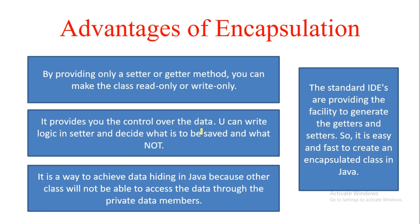Last but not least, standard IDEs like Eclipse provide a facility to generate getters and setters very easily. In Eclipse, you can right-click, go to Generate Sources, and check the checkboxes for whichever variables you need getters and setters for. Variables for which you don't generate them remain private to that class. I'll show all these advantages and how to implement encapsulation in Java in the next video — stay tuned, thank you.